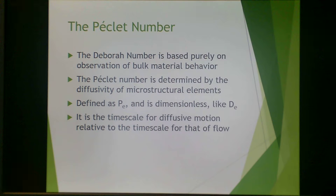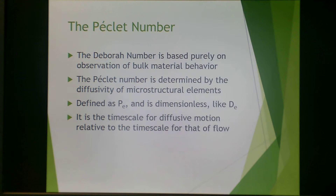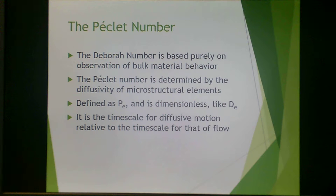The Péclet number is a different dimensionless number, similar to the Deborah number. However, the Deborah number is purely based on observation of bulk material behavior, whereas the Péclet number is determined by the diffusivity of microstructural elements rather than the bulk. It reflects the timescale for diffusive motion relative to the timescale for flow.